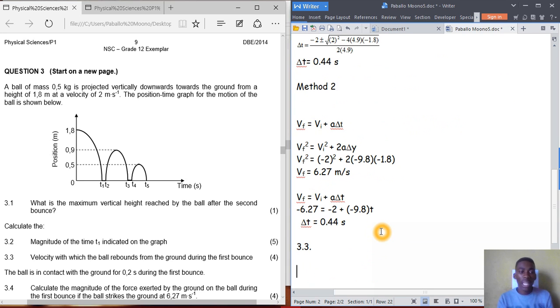Now for problem 3.3, we need to find the velocity with which the ball rebounds from the ground. We have velocity at t2, and from problem 3.2 the velocity is 6.27. We need to find the final velocity. Whenever we talk about the maximum point, the final velocity at the maximum point is 0, the turning point velocity is 0.